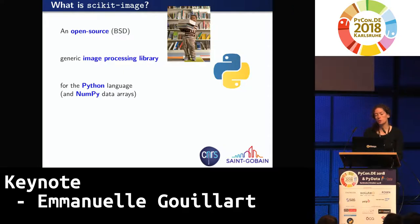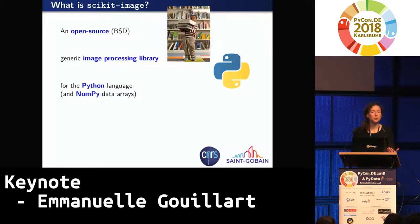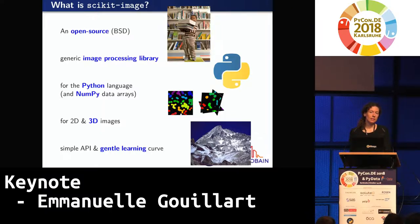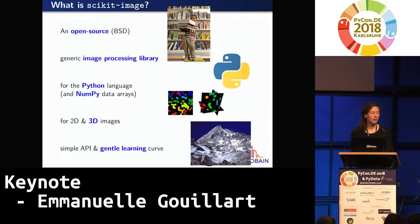What is scikit-image in a few words? It's an open source generic image processing library — not an application with a GUI, but something you can reuse in your scripts or if you want to write a GUI. It's for Python and relies heavily on NumPy data arrays as the main object. One specificity is that it works both for 2D and 3D — grayscale and RGB images — so that people coming from different modalities like microscopy, MRI, or tomography can all use the same tools.